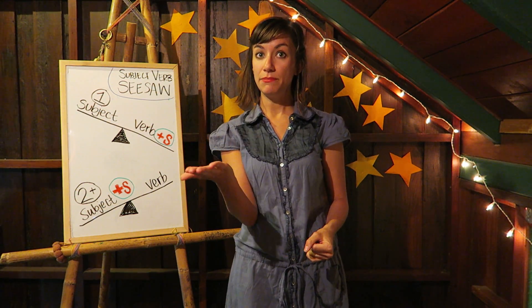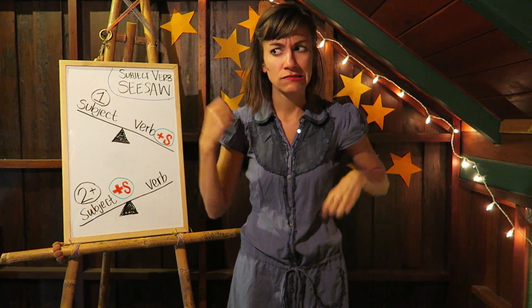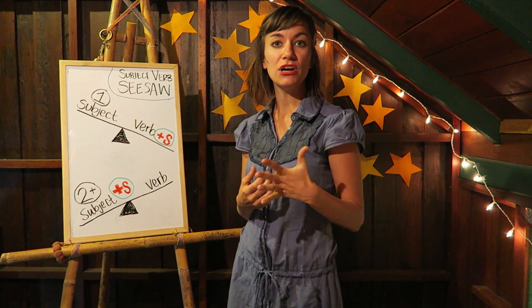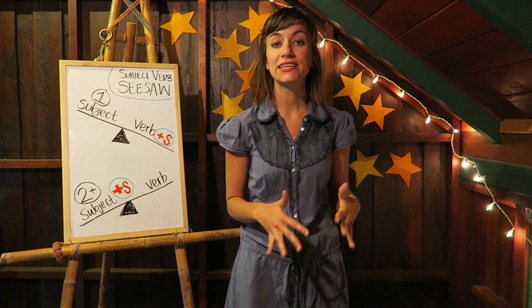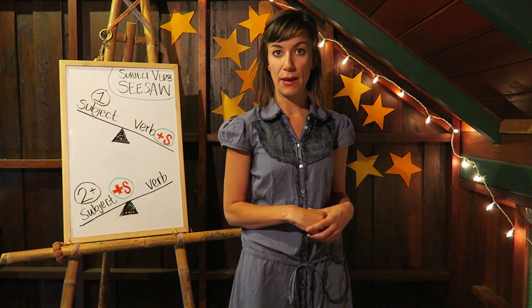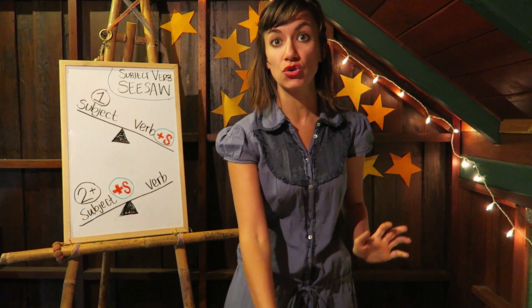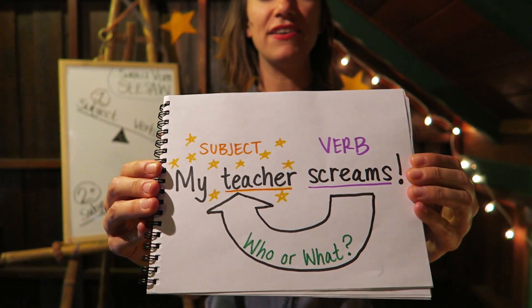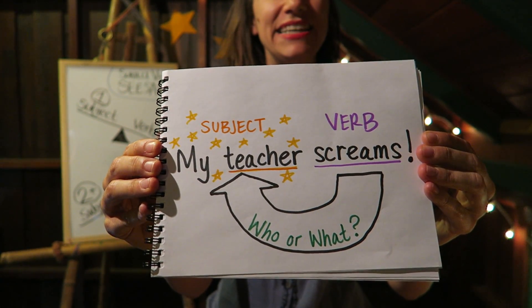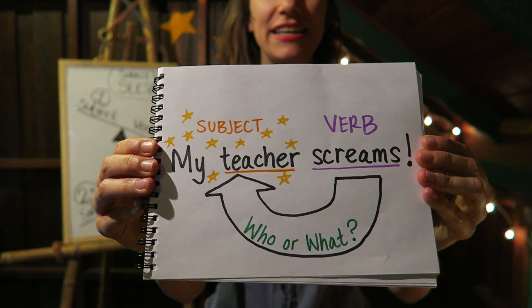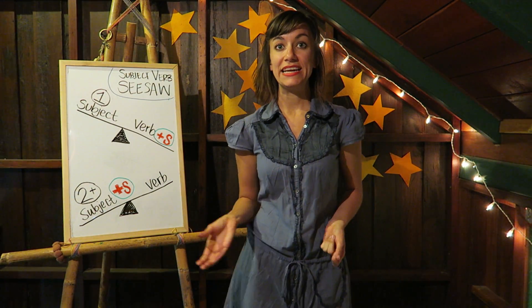With subject-verb agreement, you need the subject and the verb to agree. The verb is the action word of the sentence. The subject is who or what does the verb. For example: 'My teacher screams.' 'Screams' is the verb — it is the action word. Who or what screams? My teacher. 'Teacher' is the subject of the sentence.